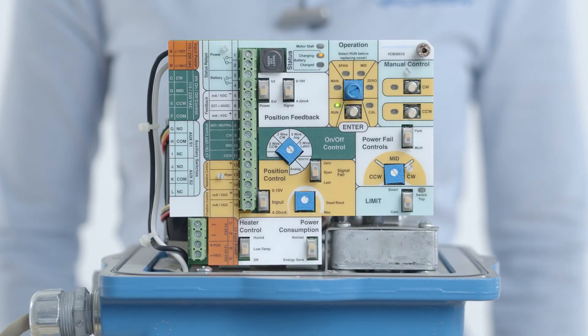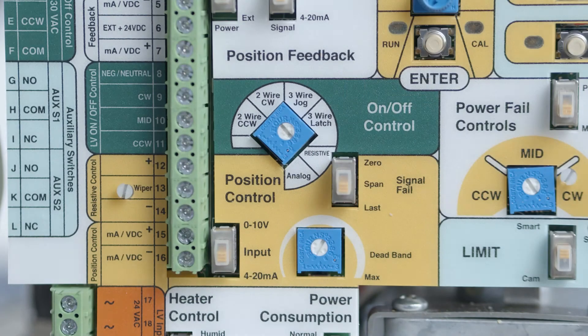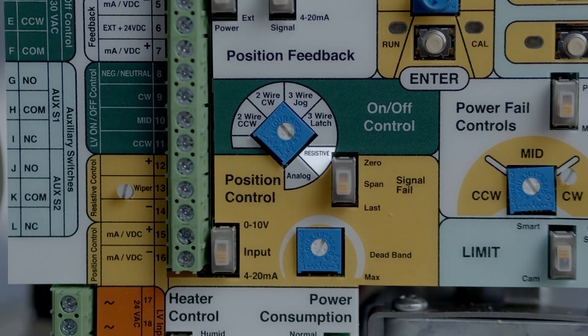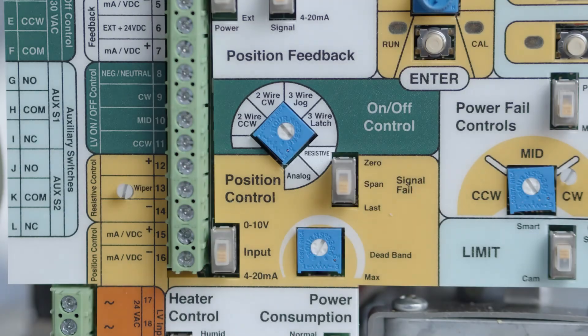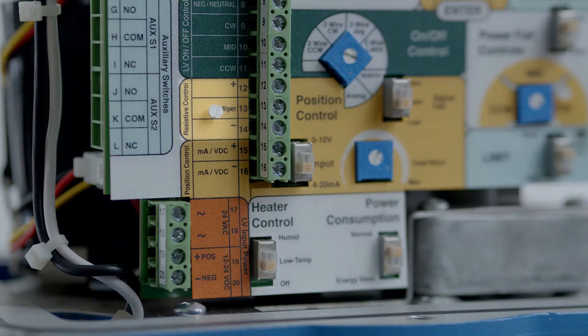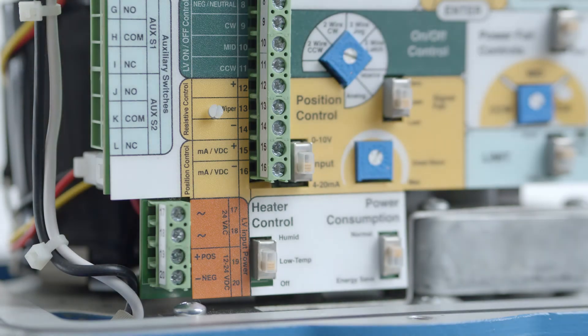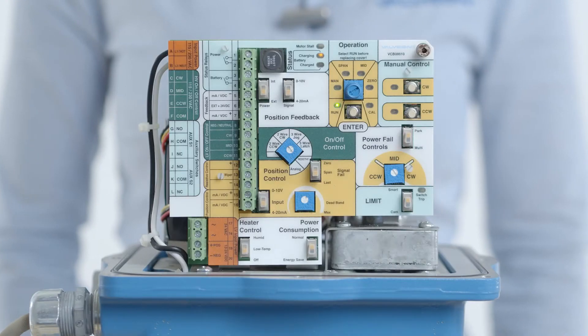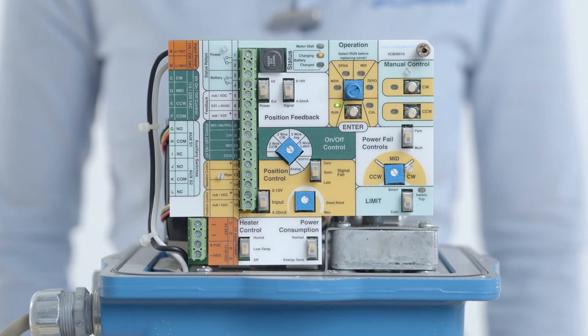To control the actuator with a resistance signal such as 0 to 135 ohms, first select resistive in the position control region of the mode selector. The resistance signal will connect to terminals 12 through 14 on the universal control board. The board will respond to resistant signals up to 10k ohms. The minimum span signal is 100 ohms.